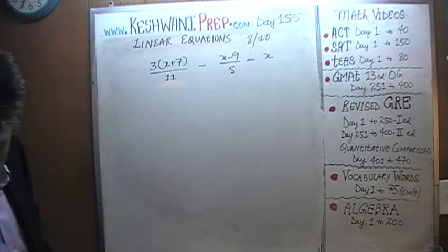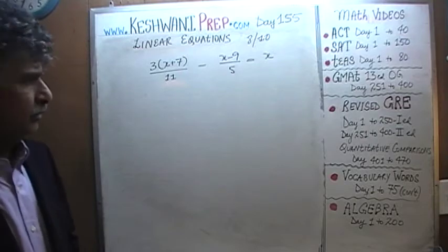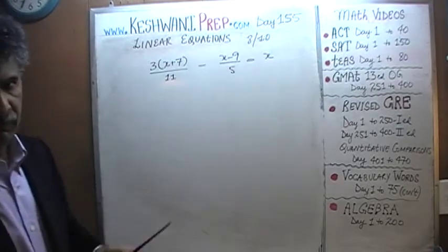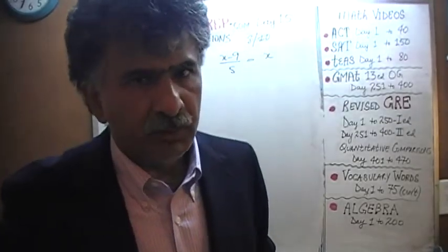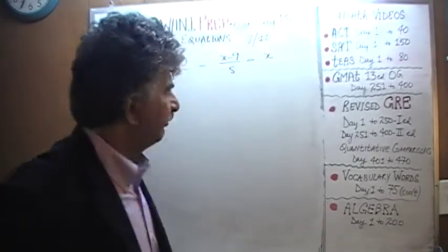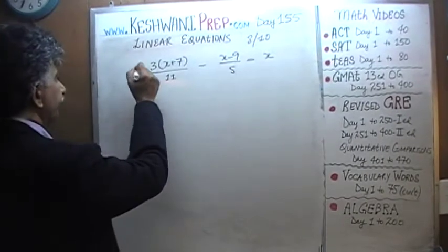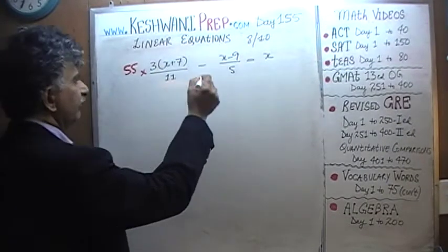3 times x plus 7 over 11 minus x minus 9 over 5 equals x. Well, the first thing we need to do is to get rid of this 11 and the 5 from the bottom. The smallest number that is divisible by both 11 and 5 is 55. So let's multiply this entire equation by 55.